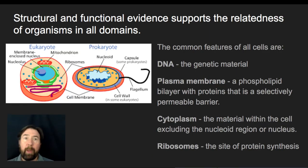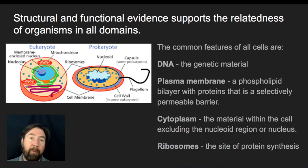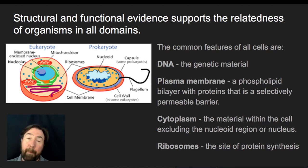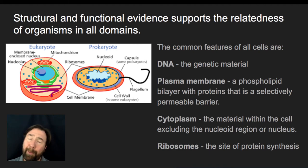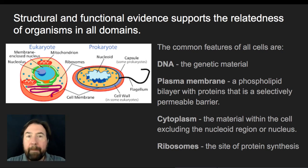Another thing we can use is the structural and functional evidence that supports relatedness of organisms in all domains — those cells with a nucleus versus those without. For a long time, we put all those without a nucleus in the same bucket. But we've since understood that some of what we used to call prokaryotes — archaea and bacteria — are really distinctly different groups. When we look at them, they lack a nucleus and have nucleoid regions.